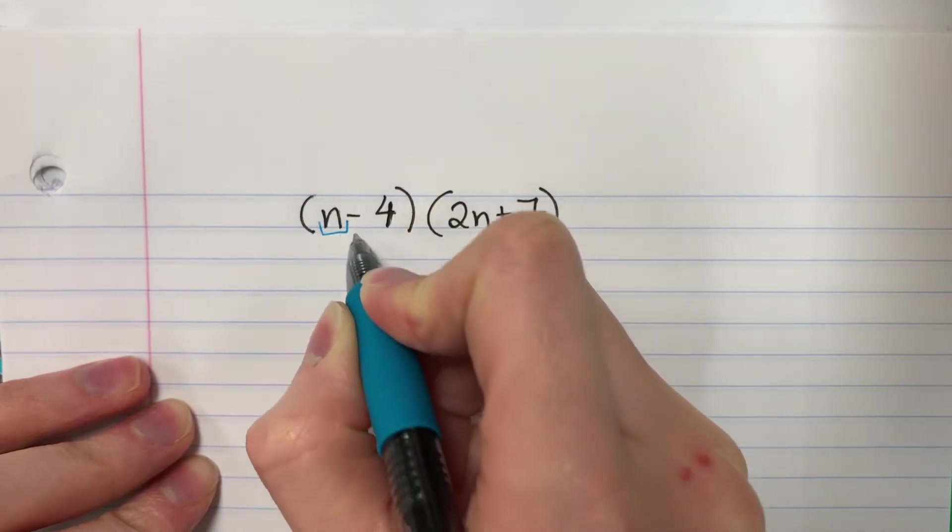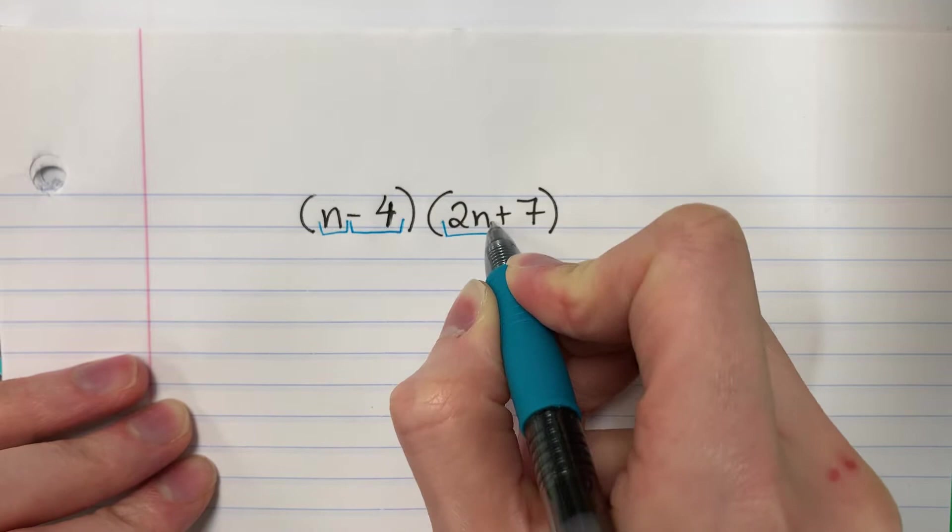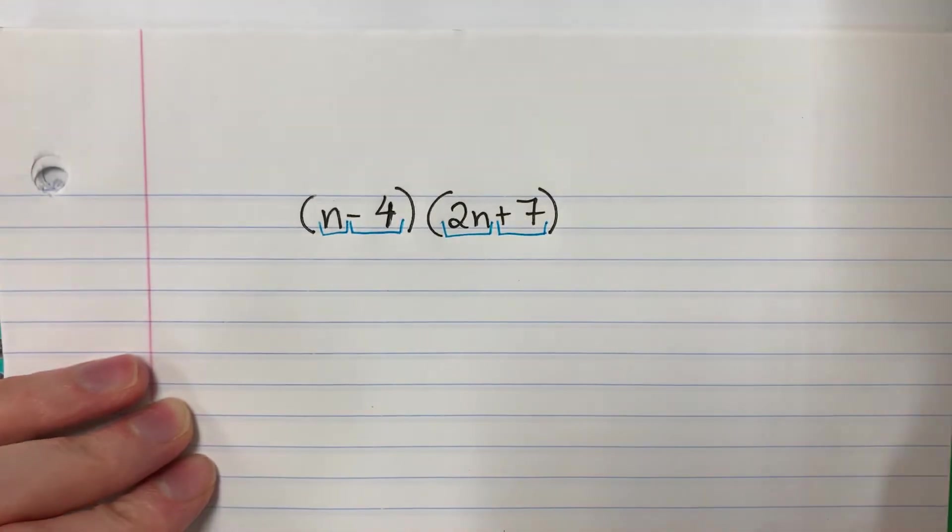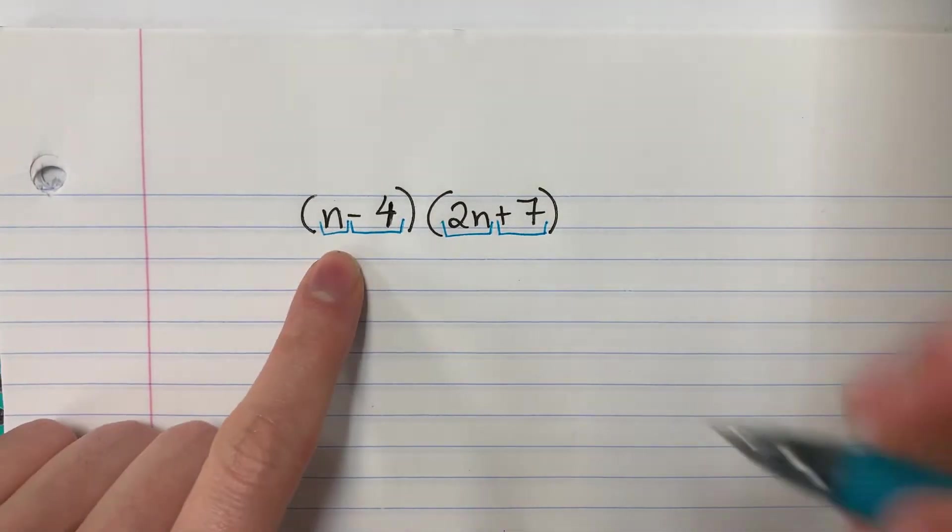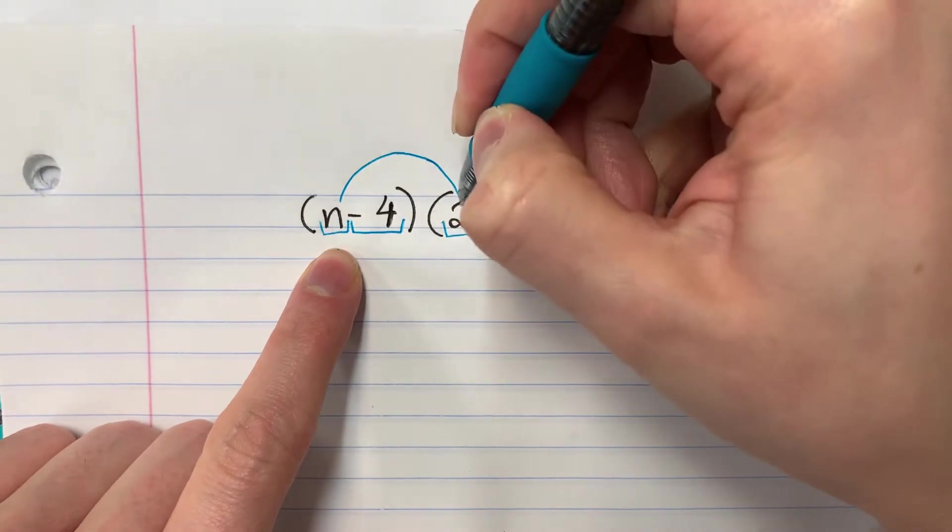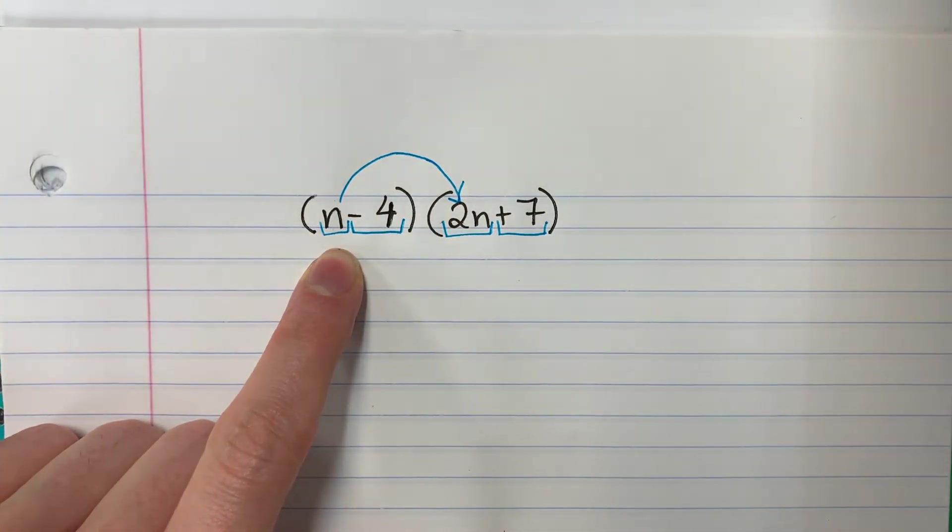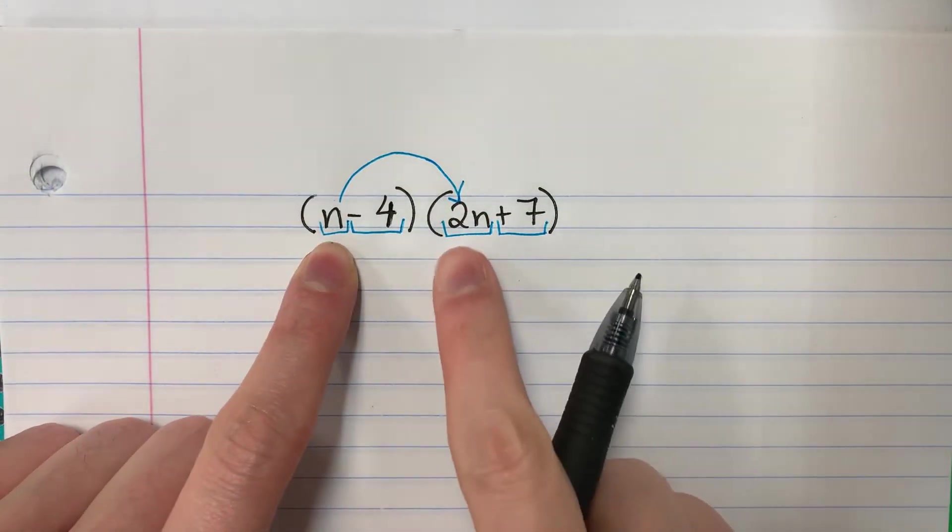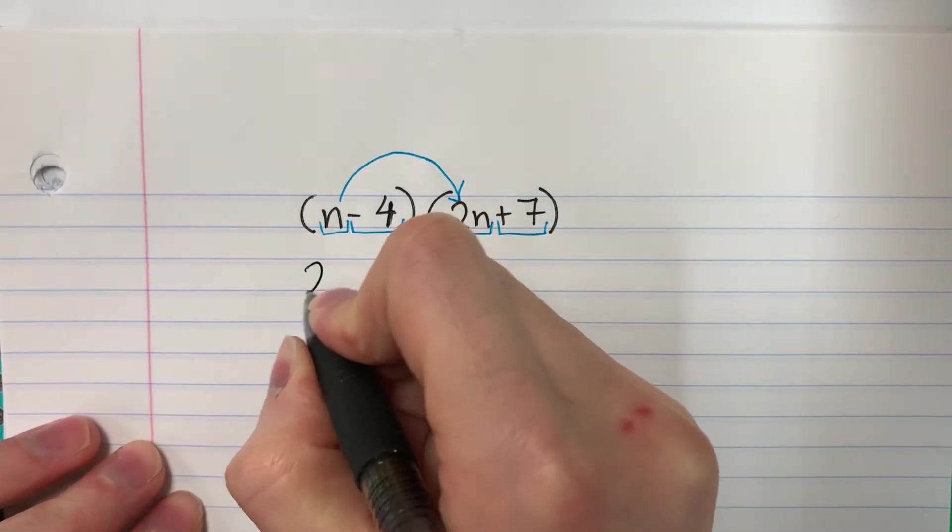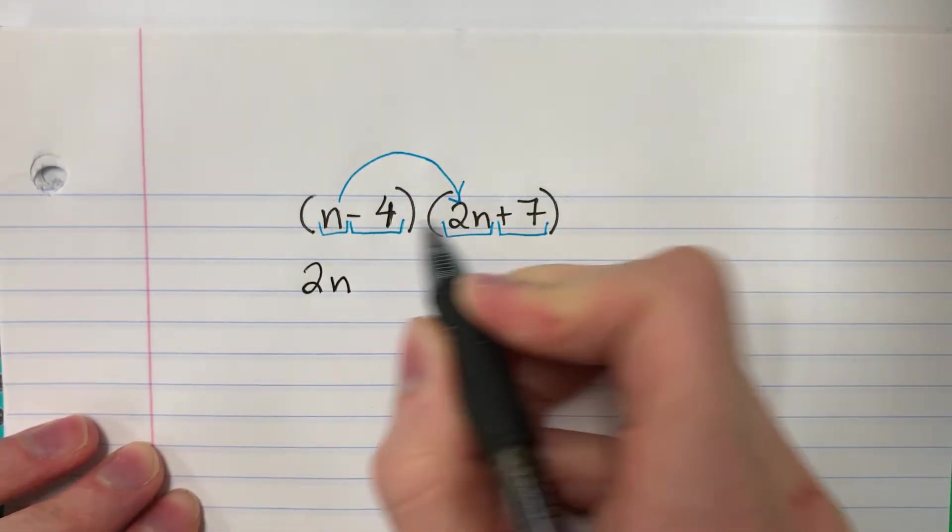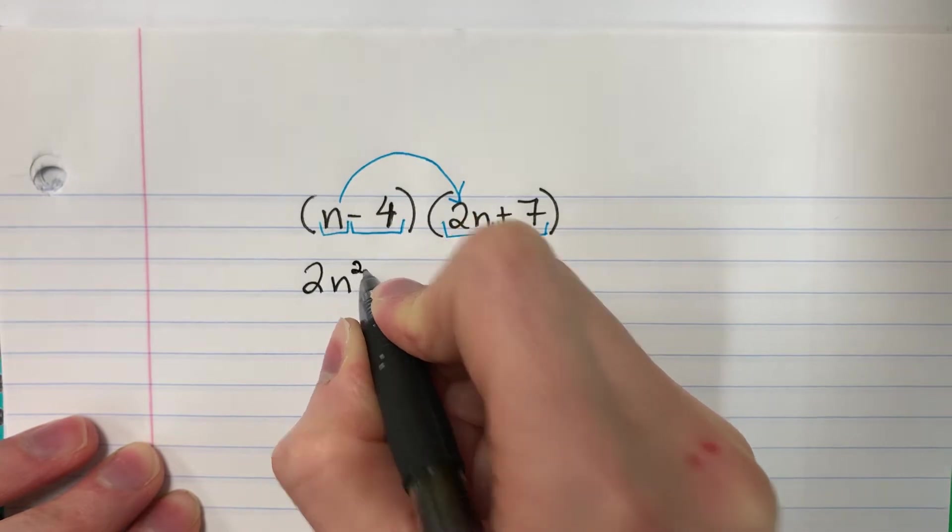I have n, negative 4, 2n, and positive 7. And I'm going to multiply. So first I'm going to do n times 2n, n por 2n. So n times 2n, that is 2n. How many n's? Cuántos n's? Two. So squared.